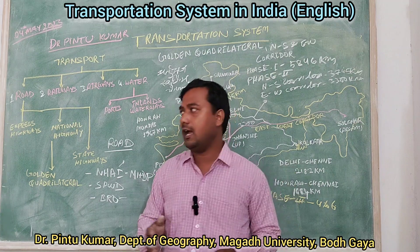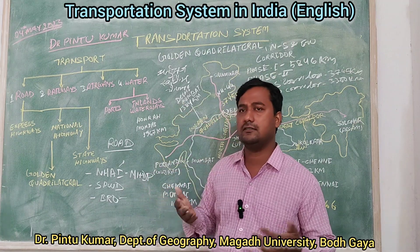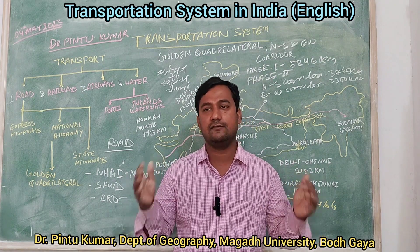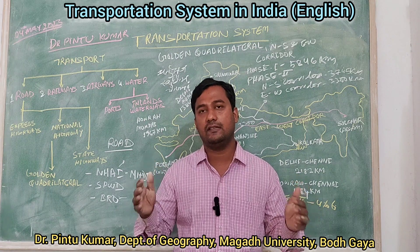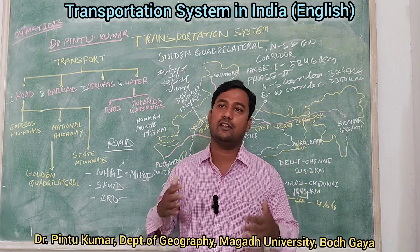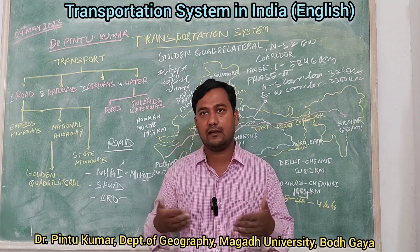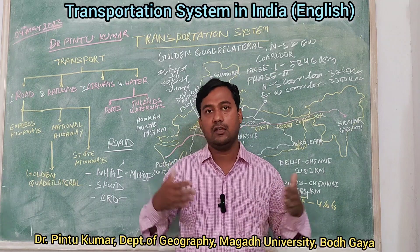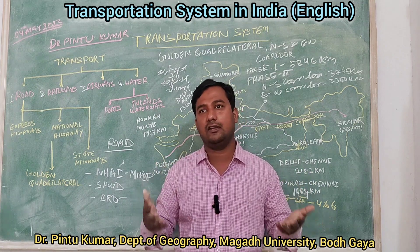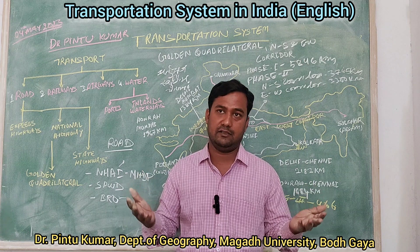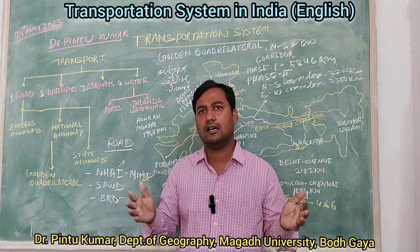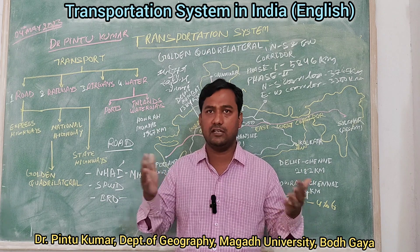It has been recorded in history that the Indian civilization was mainly an urban civilization where the road network was connected at right angles, with a very well-built and developed road network system. This is evident from historical records about the urban settlements of India.